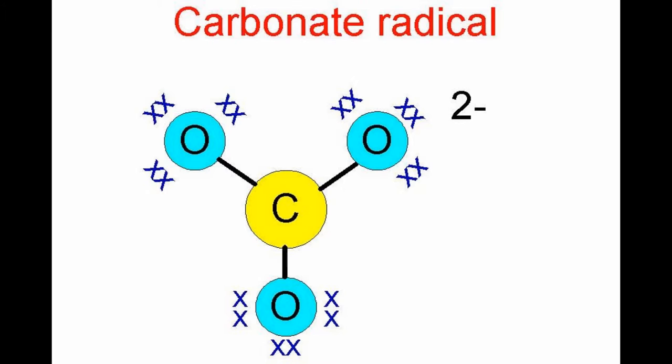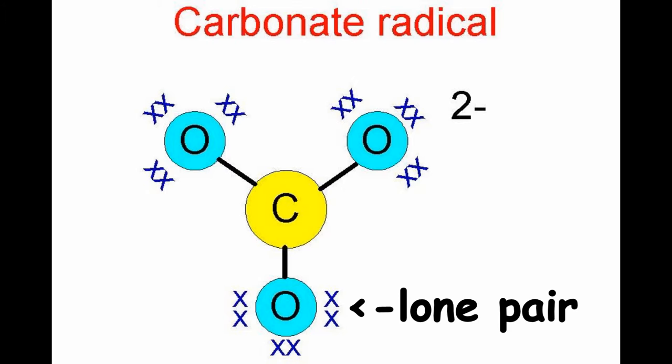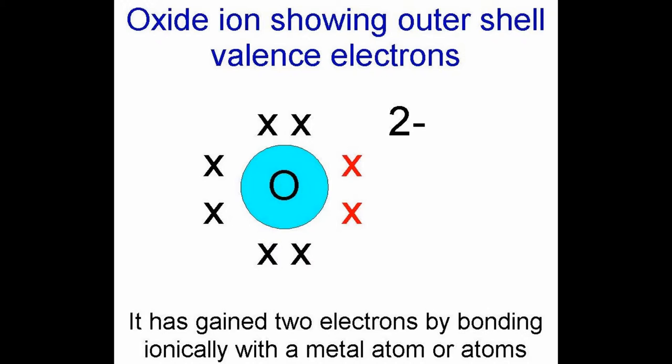Around the same time as Brønsted and Lowry, American Gilbert Lewis began drawing chemical particles using lines to show covalent bonds of two shared electrons. He also showed on his diagrams lone pairs of unbonded electrons. He noticed that bases contained these lone pairs.